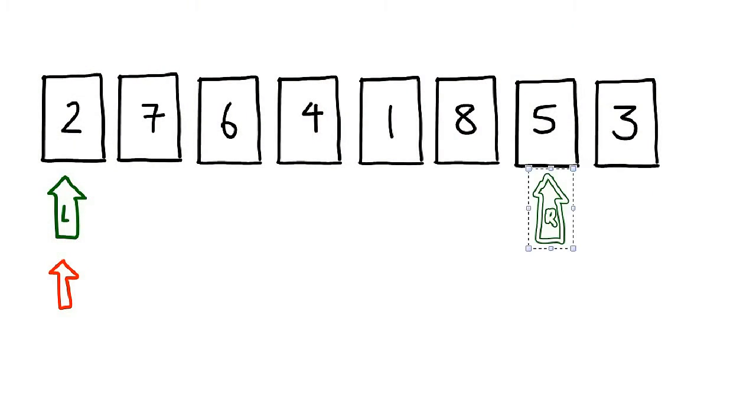Now, we have a left and a right pointer, so which one do we move? The answer is we will move the right pointer. You don't have to worry so much about why that is so — I will come back to this and explain it again. So we move the right pointer one position in. Two and five is compared, no swap is necessary, so we move on.